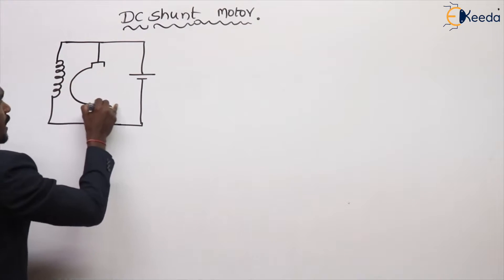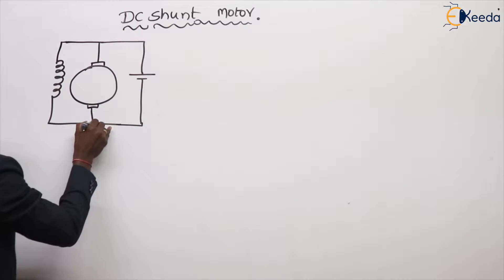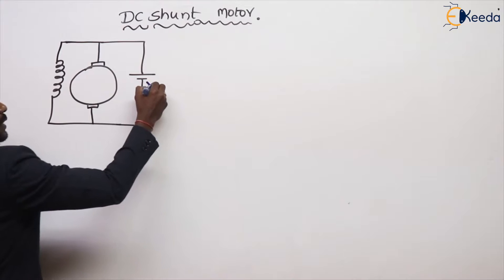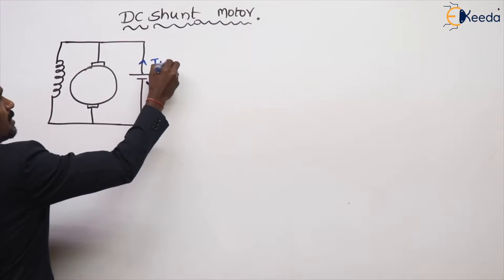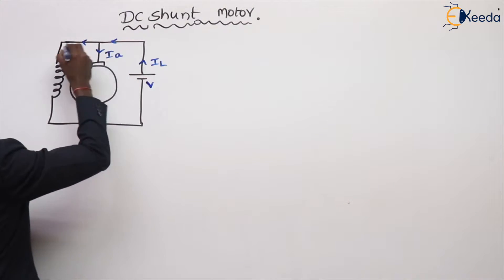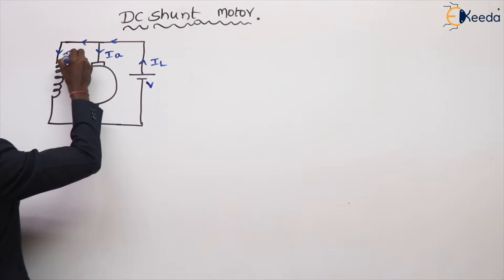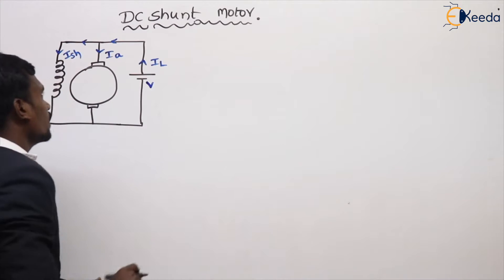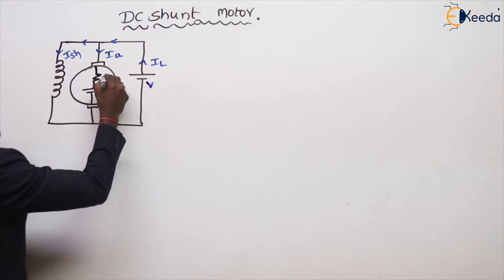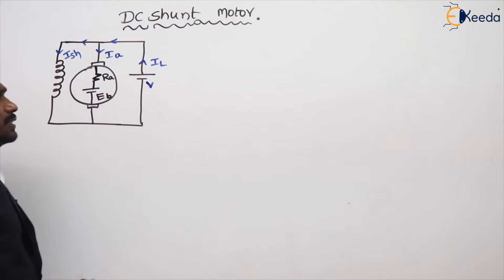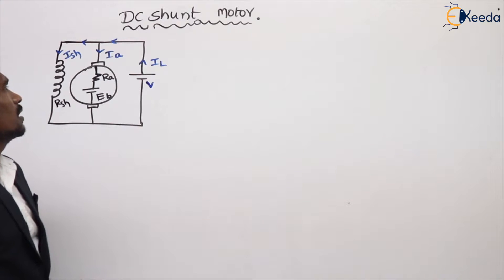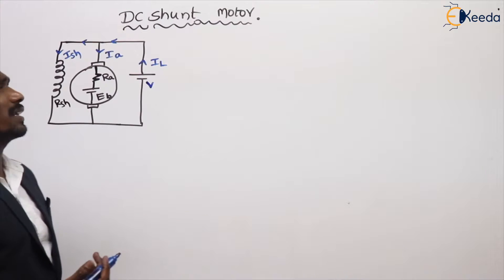Here we have the armature and the field winding. The supply voltage is V with line current IL. This IL divides into two parts: one is the armature current IA and the other is the shunt field current ISH. The armature winding develops back EMF and has armature resistance RA, and the shunt field resistance is RSH. This is the DC shunt motor circuit diagram.